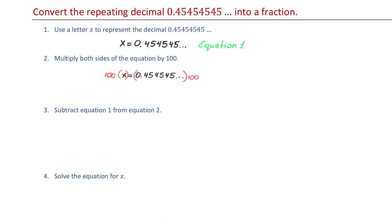So why do we multiply by 100? That is because the given decimal has two repeating digits, which are 4 and 5. If we would have a decimal with only one repeating digit, for example, if we would have X equals 0.444 and so on, then we would multiply both sides by 10.